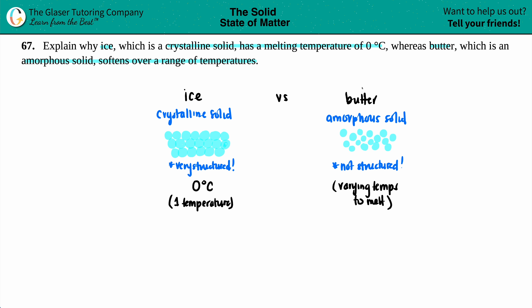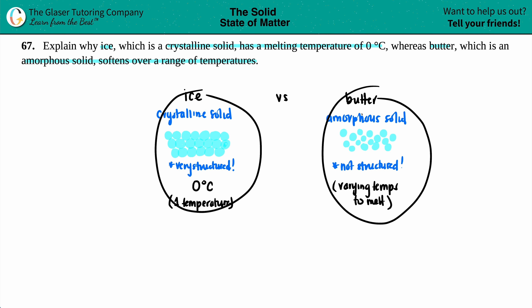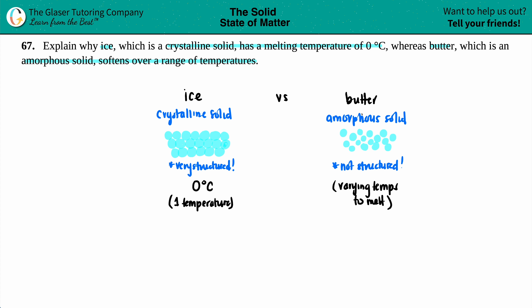Now we just have to explain why ice is crystalline and why butter is amorphous, and why ice has one melting temperature but butter does not. The key is what ice actually is — ice is just H2O in solid form. If we draw the Lewis structure for water, it has oxygen in the middle surrounded by two hydrogens.